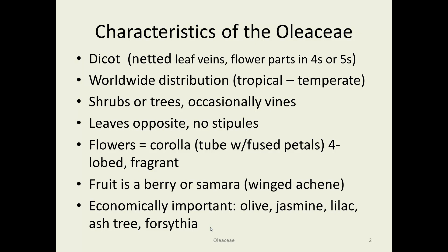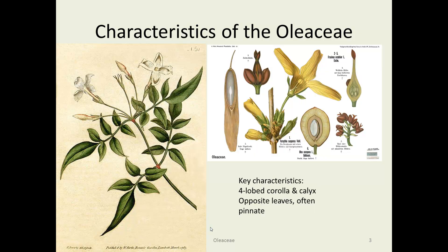Samara is also called winged achenes. There are some economically important members in this family: olive, probably the most notable, but also ash trees, forsythia, jasmine, and lilac.